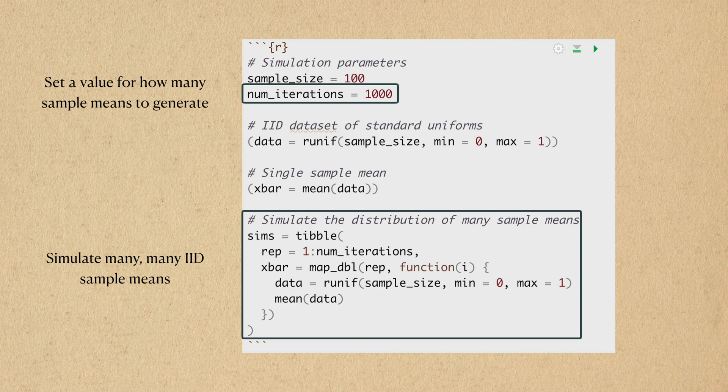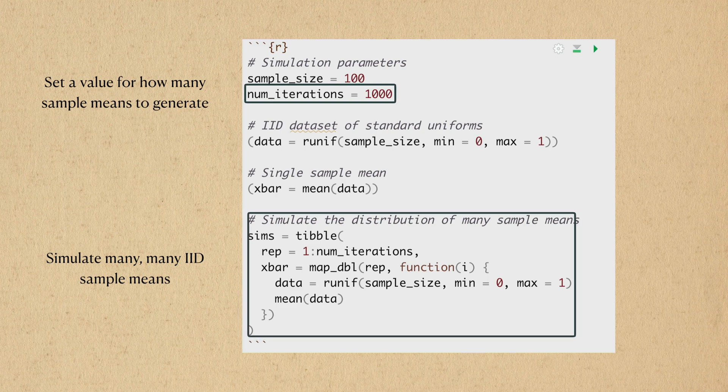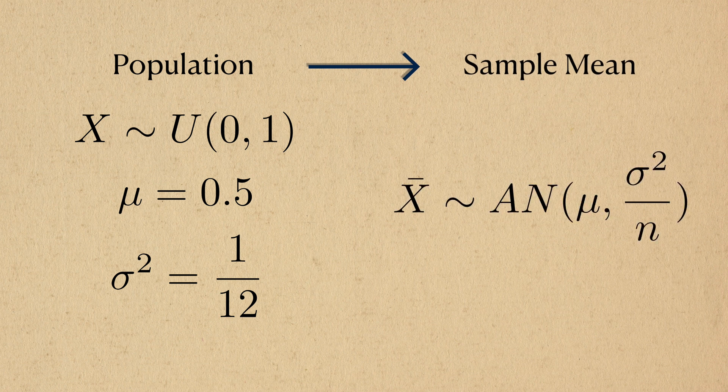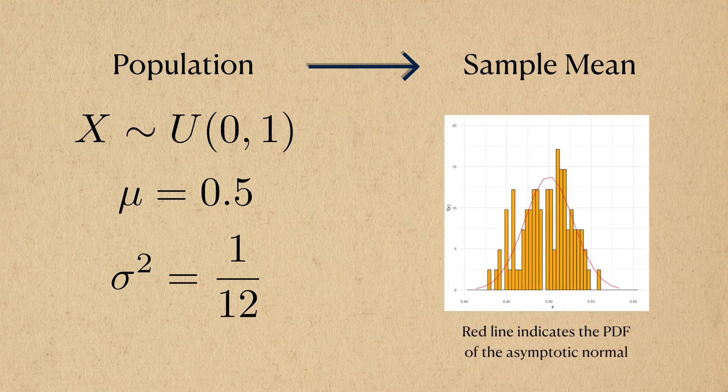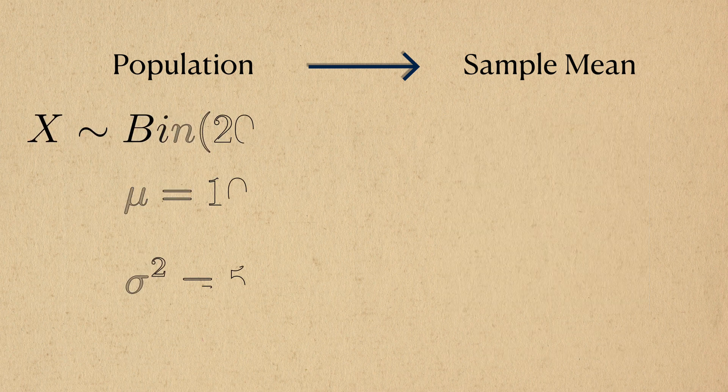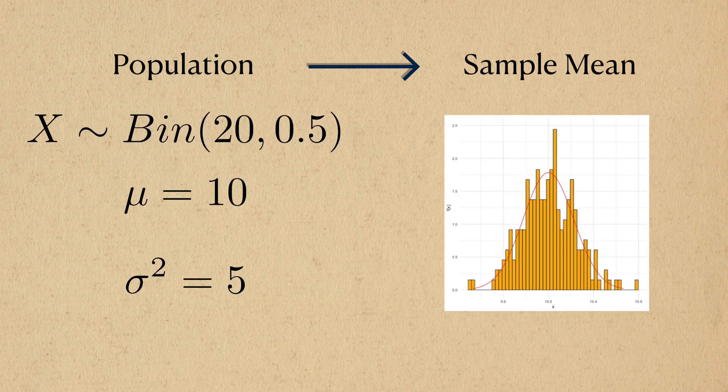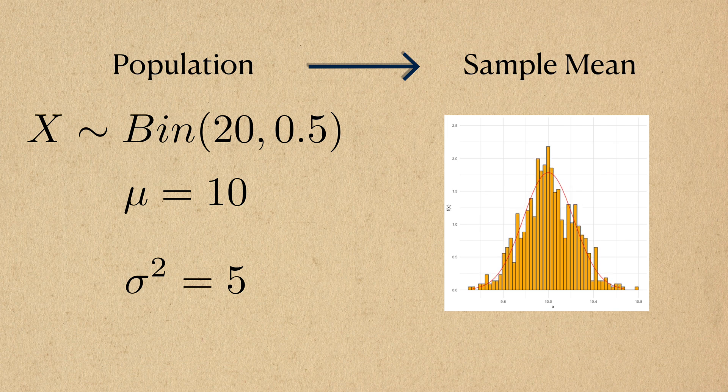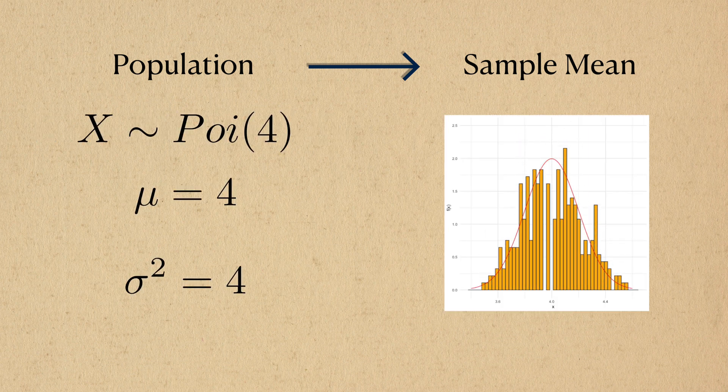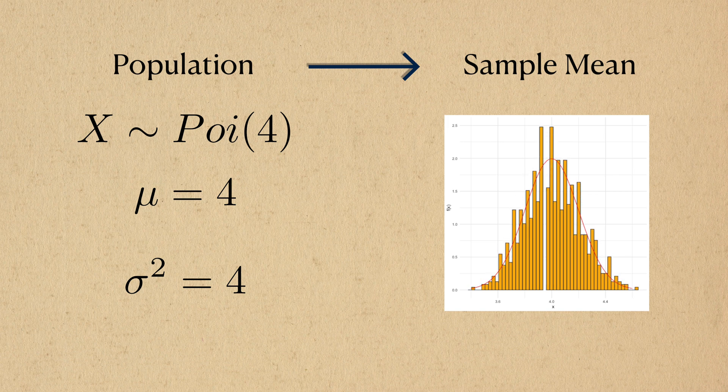I need the distribution of the sample mean, so I'll do this many, many times. Now that I have a collection of sample means, I'll compare it to the appropriate normal that it's supposed to converge to. We can see that sample means of uniforms produce the normal distribution. What if the data was binomial? Same thing. Poisson? Same thing.